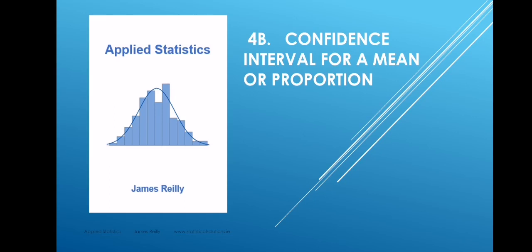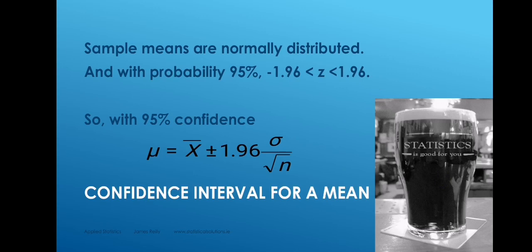Welcome to this video lecture about confidence intervals. We're going to begin by considering a confidence interval for a population mean. When we want to estimate a population mean, typically what we do is we draw a sample from that population, calculate the sample mean, and use it as an estimator of the population mean. So we want to know mu and we use x bar as an estimate of mu. But how close is this estimate? What kind of confidence can we associate with it?